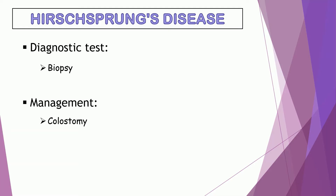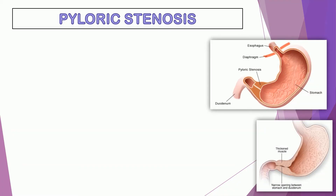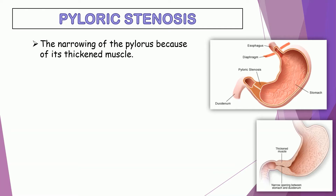Next is pyloric stenosis. Pyloric refers to the pylorus, which is the muscle in the stomach, while stenosis means narrowing. So in simple definition, pyloric stenosis is the narrowing of the pylorus because of its thickened muscle. It is located between the stomach and the small intestine. The cause of this condition is still unknown.